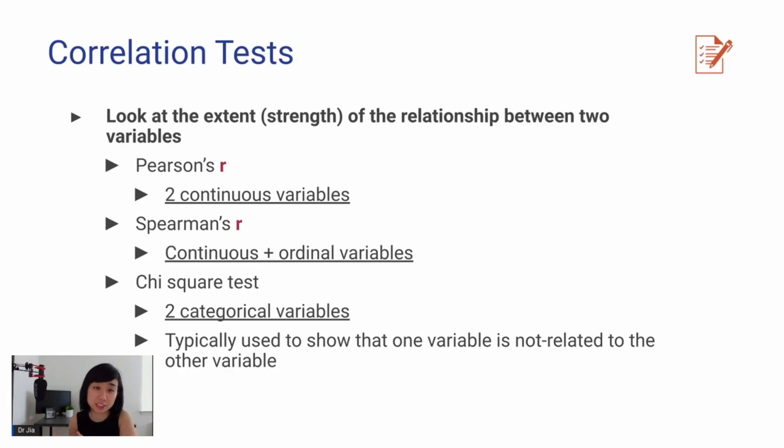Next, let's talk about correlation tests. Here, you are trying to look at the extent or the strength of the relationship between two variables. And when you have two, when you're comparing two continuous variables, you use Pearson's R. If you have a continuous and with ordinal variables, you use Spearman's R. If you use chi-square test, it's basically comparing two categorical variables. You can actually get the strength of association, but it's typically used to show that one variable is not related to the other variable.